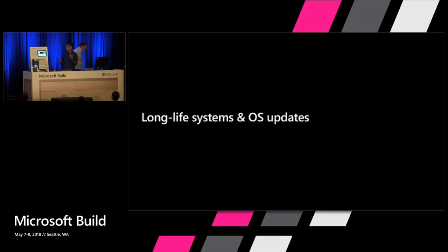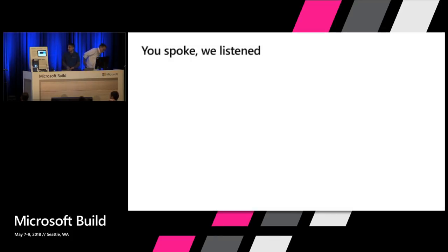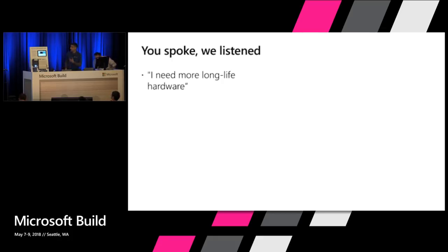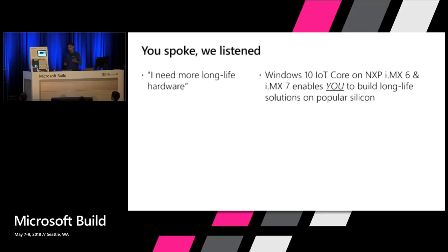When we spoke with folks last year, there were three things we really heard from developers. First, people said they need better hardware — longer life silicon, longer life solutions they can build for both commercial and industrial use. We responded to that feedback and enabled Windows IoT Core on NXP silicon, on the iMX6 and iMX7 family. These are two of the most popular industrial silicon solutions available in the market today.